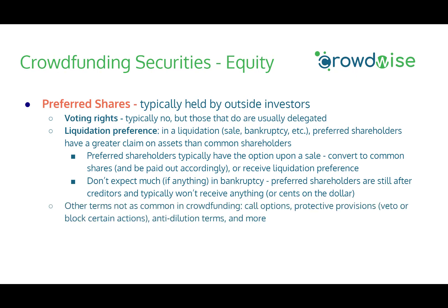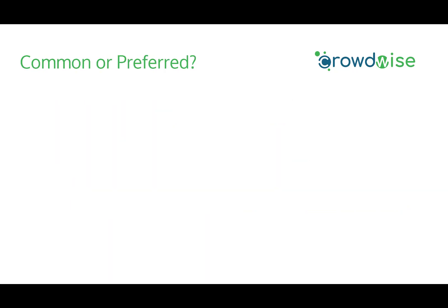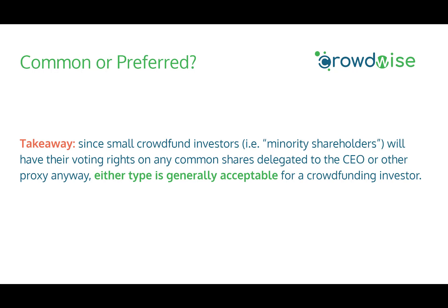Other terms not as common in crowdfunding but common with preferred shares for angel or VC deals may include call options, protective provisions allowing preferred shareholders to veto certain actions by common shareholders, and anti-dilution terms. Since small crowdfund investors typically have their voting rights delegated anyway on any common shares, either type of stock is generally acceptable for a crowdfunding investor. It will usually come down to a preference of the platform or the intermediary that the issuer is raising on.